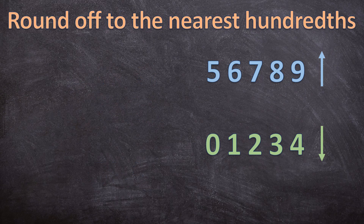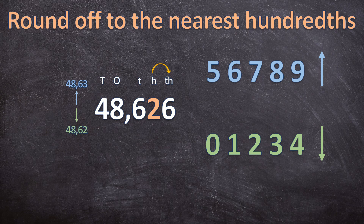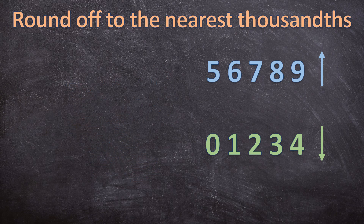For the next question we need to round off 48,626 to the nearest hundredths. We look at the place values — we're either going to round up to 48,63 or round down to 48,62. We use the digit in the thousandths place value to determine which direction. In the thousandths place we have a 6. Since 6 is greater than 5, it rounds 48,626 up to 48,63. Remember your curvy equal sign, then your answer: 48,63.